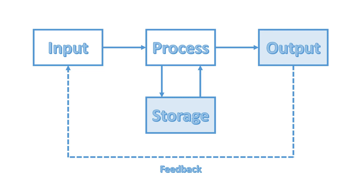So those are the two possibilities from the process. That's input, process, output, and storage. We'll look at processing in more detail in another video when we look at the CPU.